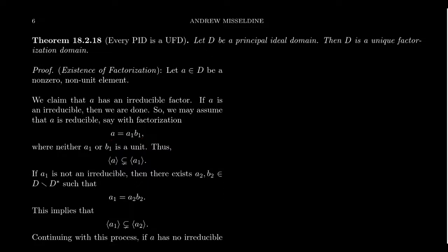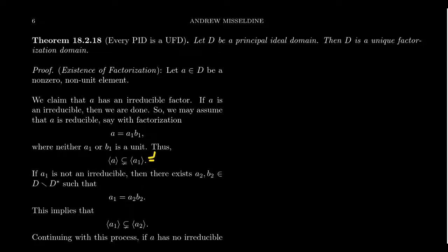Because of this factorization, the principal ideal generated by A is properly contained in the principal ideal generated by A₁. Since B₁ is not a unit, A₁ is not an associate of A, so the ideals are not equal. This ideal is also not the whole domain because A₁ is not a unit. Now, if A₁ were an irreducible element, we would be done. So suppose A₁ is not irreducible — it also factors as A₂ · B₂, where A₂ and B₂ are not units.